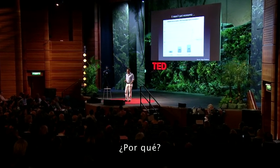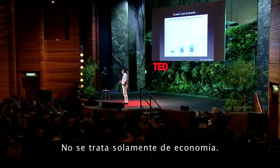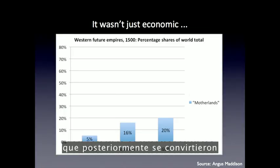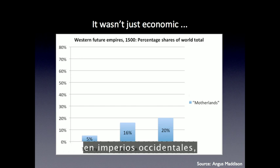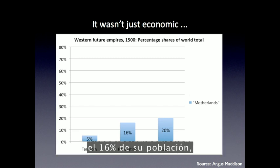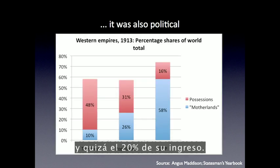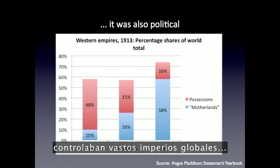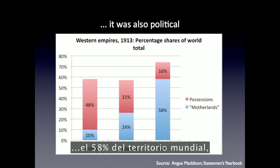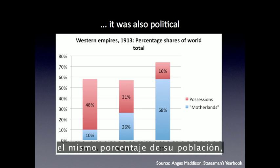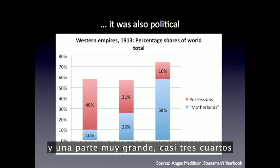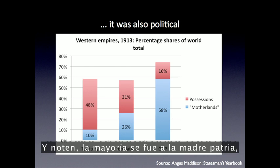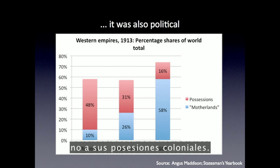So why? This wasn't just an economic story. If you take the 10 countries that went on to become the Western empires, in 1500 they were really quite tiny — 5% of the world's land surface, 16% of its population, maybe 20% of its income. By 1913, these 10 countries plus the United States controlled vast global empires: 58% of the world's territory, about the same percentage of its population, and nearly three quarters of global economic output. And most of that went to the motherlands, to the imperial metropoles, not to their colonial possessions.